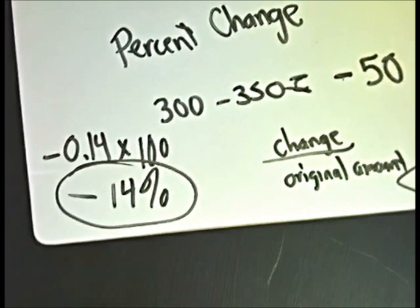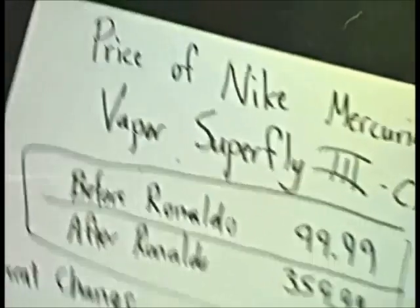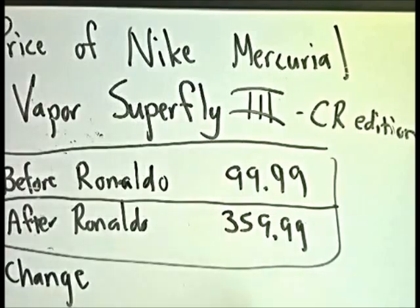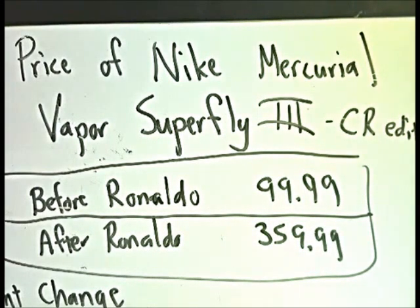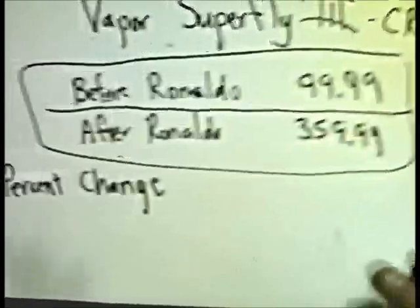Now let's do one more, and this one obviously is going to be an increase. We're going to talk about the Nike Mercurial Vapor Superfly Cristiano Ronaldo Edition. I estimated that the shoes themselves, based on the quality and materials, probably originally cost about $99.99 to make. After Ronaldo signs his name to the dotted line, they increase in price — the selling price, which you can pre-order, is $359.99. Quite a pretty penny for the Cristiano Ronaldo version.